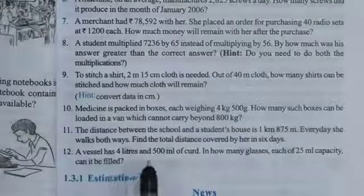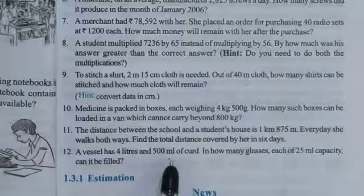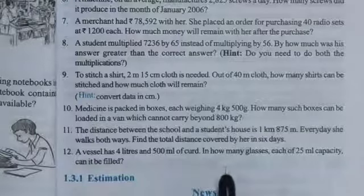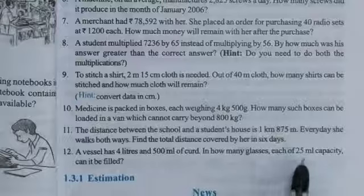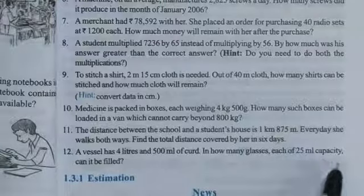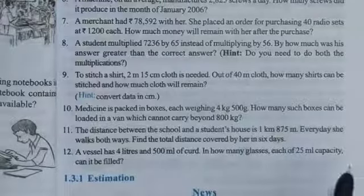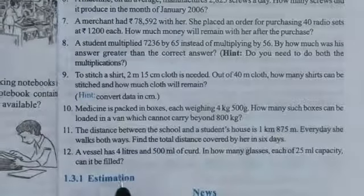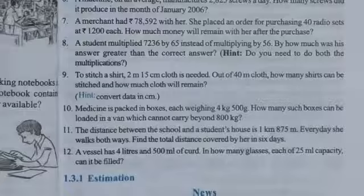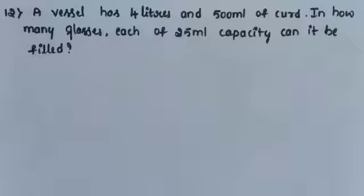Question number 12. A vessel has 4 liters and 500 milliliter of curd. In how many glasses, each of 25 milliliter capacity, can it be filled?